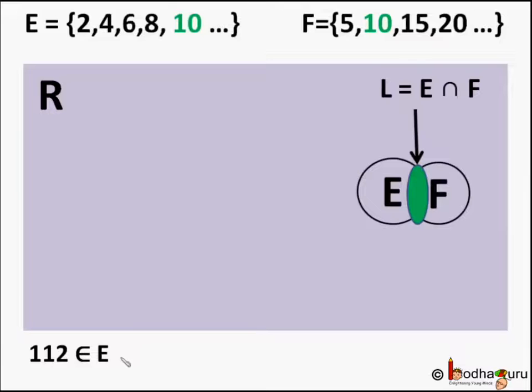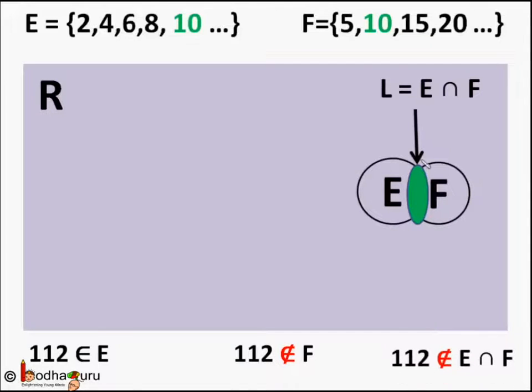Is 112 there in E intersection F? We know 112 is an even number. So it belongs to set E. But 112 is not a multiple of 5. So it doesn't belong to set F. Hence 112 doesn't belong to E intersection F.